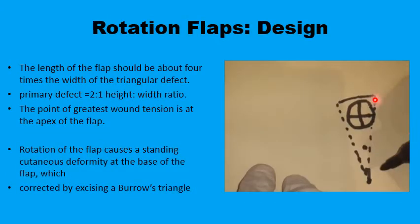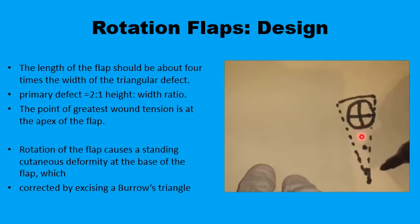Designing the flap starts by drawing an isosceles triangle around the defect. The isosceles triangle has a base very close to the defect itself. If the diameter of the defect is x, then the base should be a little more than x. The height of this triangle should be about 2.5x, so the ratio between height and base would be more than 2 to 1. The angles at the base would be about 75 degrees, meeting at a 30-degree angle at the apex.